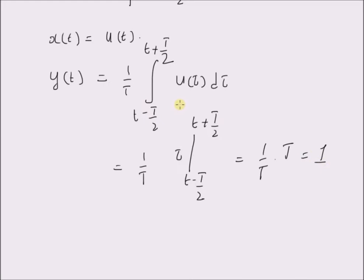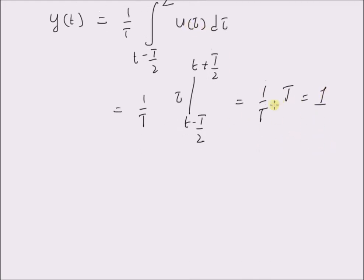Since the unit step signal is basically 1 for all values of tau, the average should also be equal to 1 because it is a constant value. Now, we can verify the result by using the convolution formula — the output y(t) should also be equal to x(t) convolved with the impulse response h(t).